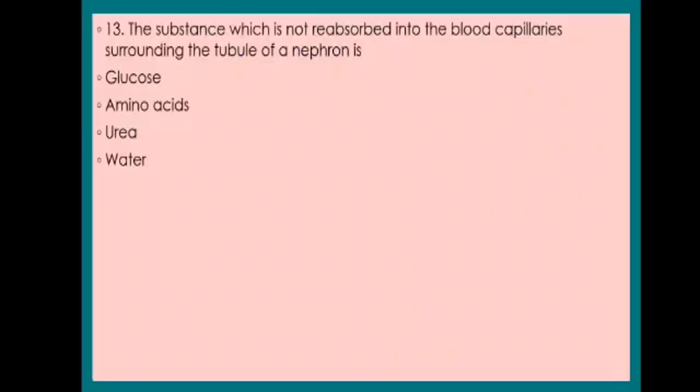Thirteenth question: The substance which is not reabsorbed into the blood capillaries surrounding the tubule of a nephron is — glucose, amino acids, urea, or water? The question asks for the substance not reabsorbed into the blood capillaries. The answer is urea.